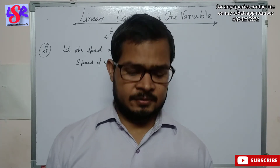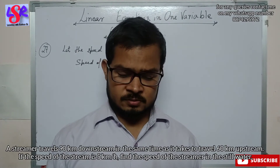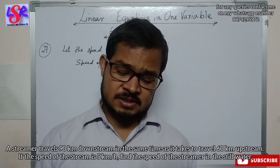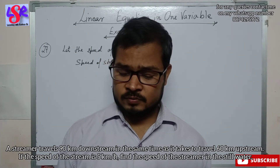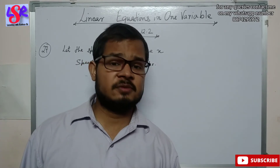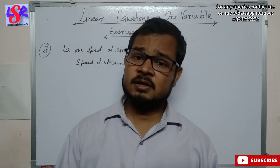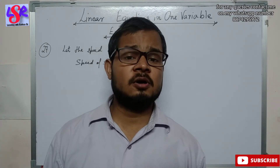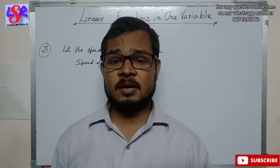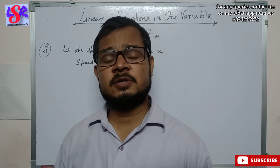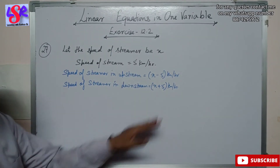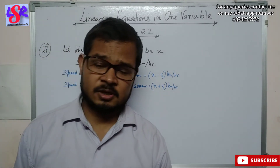Now let's move to question 27. A streamer travels 90 kilometers downstream in the same time as it takes to travel 60 kilometers upstream. If the speed of the stream is 5 kilometers per hour, find the speed of the streamer in still water. Let the speed of the streamer be x. In downstream, the stream speed is added, giving x plus 5 km/h. In upstream, the stream speed is subtracted, giving x minus 5 km/h.